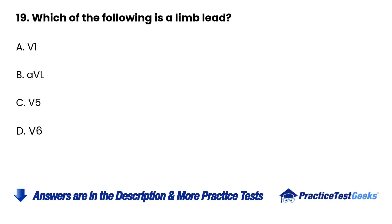19. Which of the following is a limb lead? A. V1. B. AVL. C. V5. D. V6.